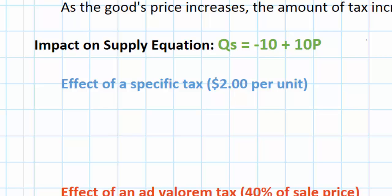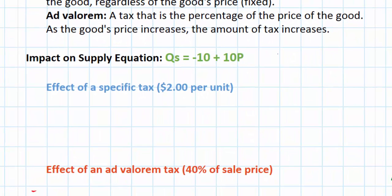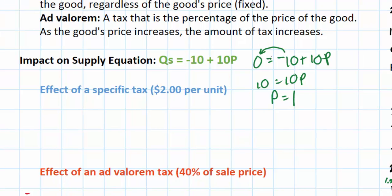To do that I should probably start by finding the P-intercept of supply. To find the P-intercept I can set Qs to 0 and solve for P. Move the 10 over here so I've got 10 equals 10P, divide both sides by 10 and I can see that at a price of 1 our supply curve begins.